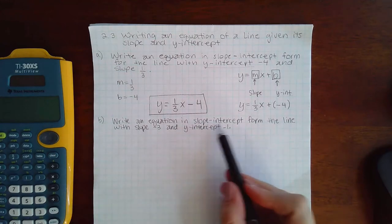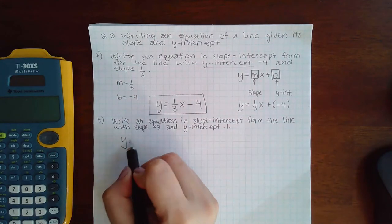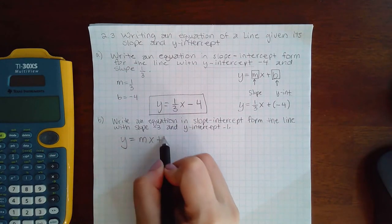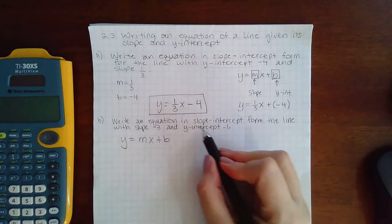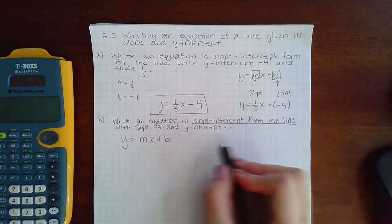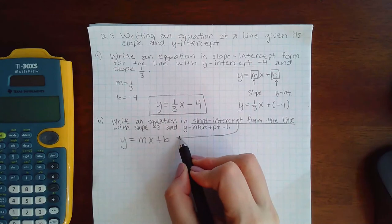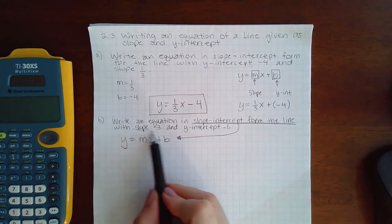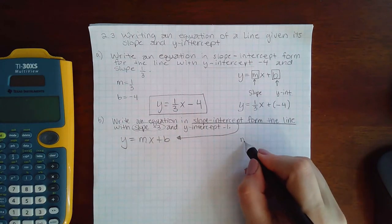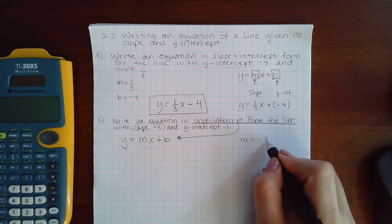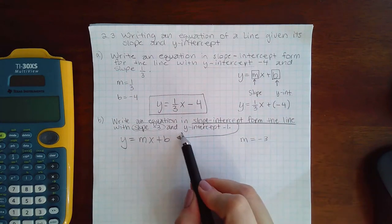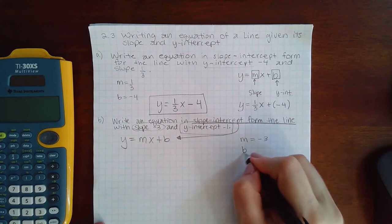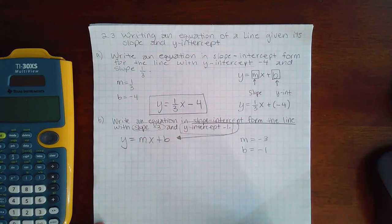They want the equation in slope-intercept form, so again we need to know what that looks like: y equals mx plus b. Then they tell me the slope is negative 3, so that means m equals negative 3, and they tell me that the y-intercept is negative 1, which means b equals negative 1.